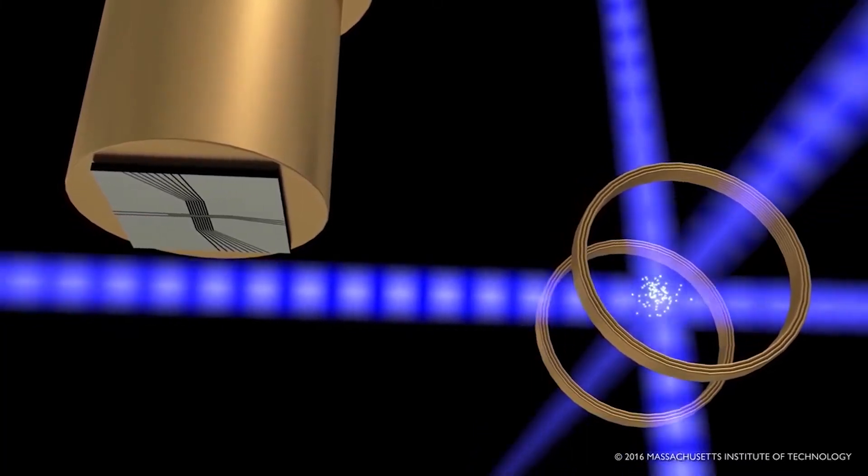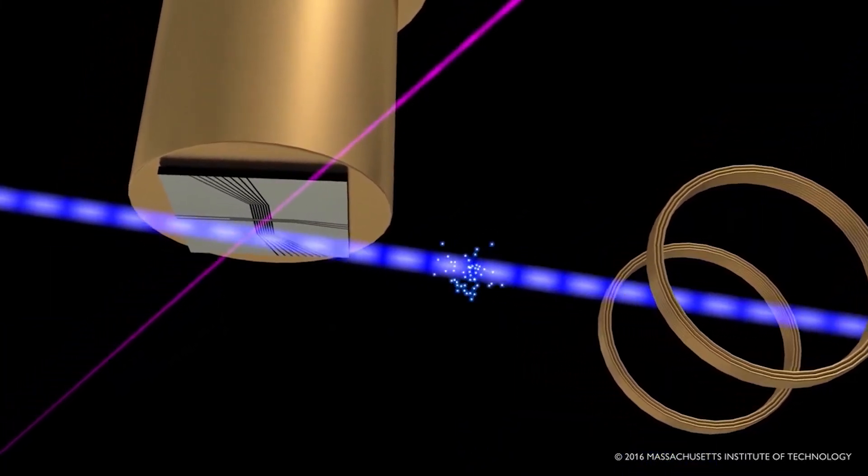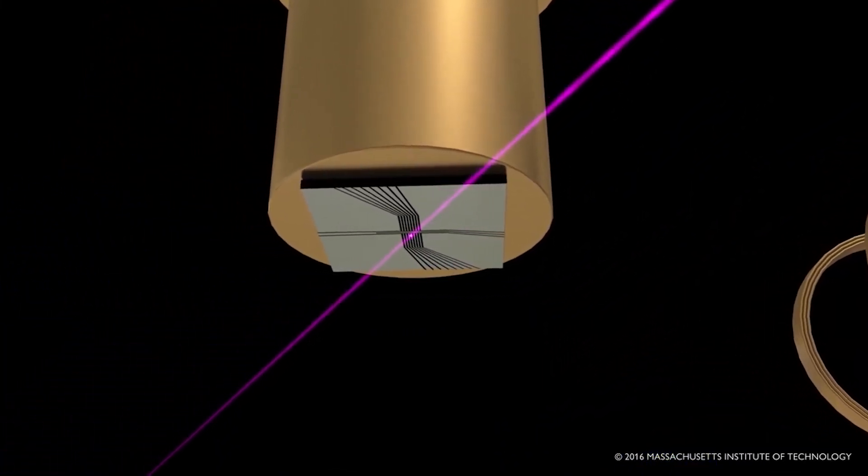Ionizing and ion cooling lasers are applied in the trap location, creating and cooling an ion there.